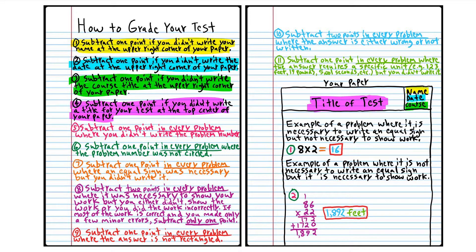You'd lose a point in every problem where you don't write an equal sign, and you'd lose two points in every problem where it was necessary to show your work, but you either didn't show the work or you did the work incorrectly.